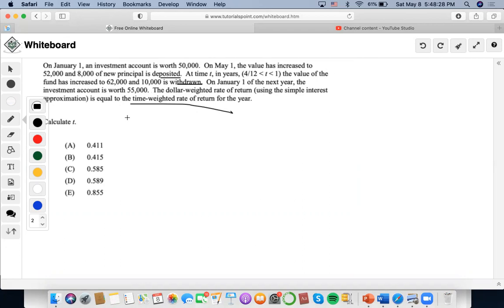We have an investment account worth $50,000 and then on May 1 the value has increased to $52,000. So $50,000 value increased to $52,000 and then the principal of $8,000 is deposited which means that $60,000 each rate.